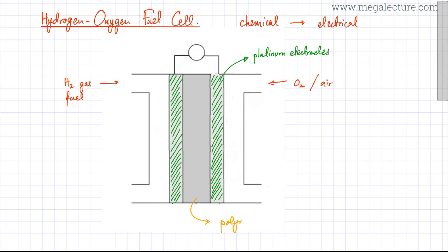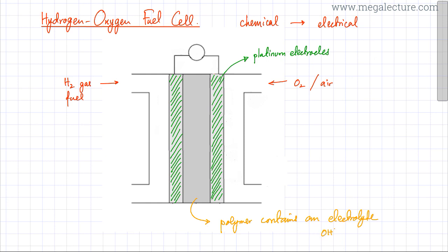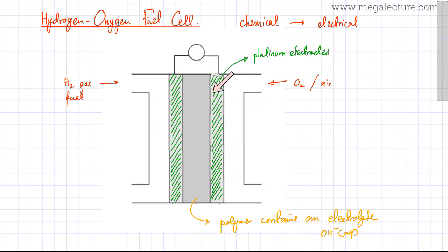This middle part is a polymer that contains an electrolyte. Remember, an electrolyte is a solution that contains ions. The first type of fuel cell I'm going to discuss is where the electrolyte contains OH⁻ ions — it could be NaOH or KOH in aqueous state. Ions produced in this electrolyte help in completing the circuit and in current flow.